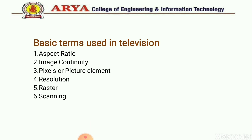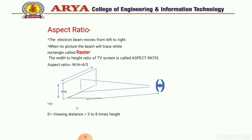First we will discuss about aspect ratio. Aspect ratio is the ratio of width to height of the TV screen. You can see that the pixels along the X axis are more as compared to the Y axis. The standard aspect ratio is 4 is to 3 — the width of the picture screen is 4 and the height is 3.